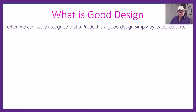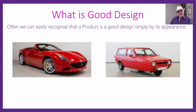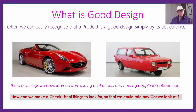What is good design? Often you can just tell something's a good design — you look at it and go, oh yeah, that's good. Whereas you look at something else and you don't have those same feelings. There are things we've learned from seeing a lot of cars and hearing people talk about them. We know what's a well-designed good one and what may not be. How could we make a checklist or set of rules to figure out what is a good car and what's not?